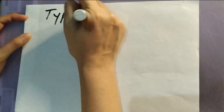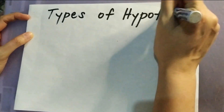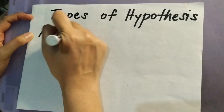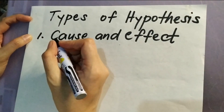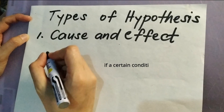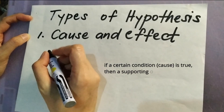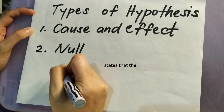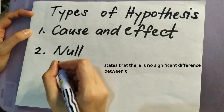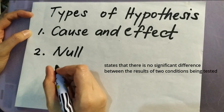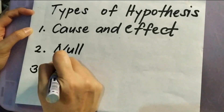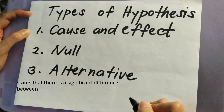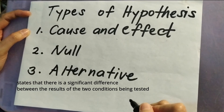There are three types of hypothesis: cause and effect hypothesis, null hypothesis, and alternative hypothesis. Cause and effect hypothesis is a statement that if a certain condition is true, then a supporting observation occurs. Null hypothesis states that there is no significant difference between the results of two conditions being tested. Alternative hypothesis states that there is a significant difference between the results of the two conditions being tested.